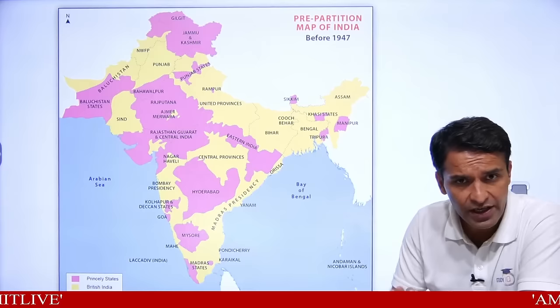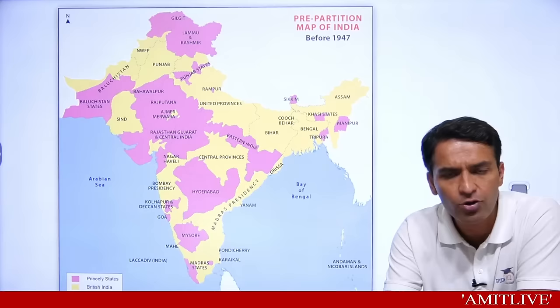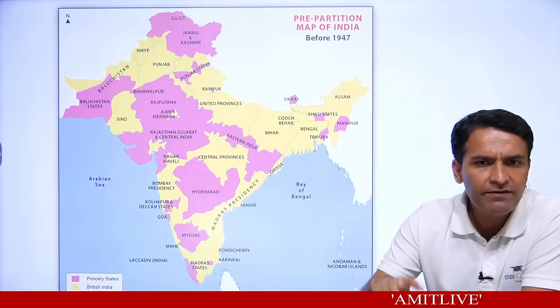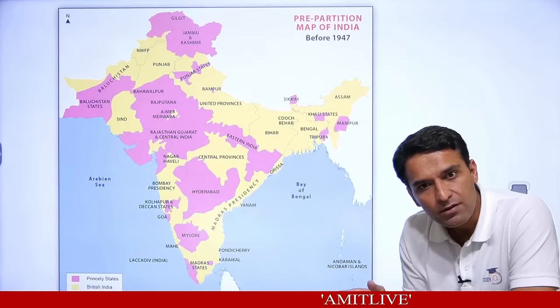Indian Congress and Muslim League both agreed to this. So the 389 people were selected. But once elections happened, differences arose again between Muslim League and Congress. The Muslim League decided to boycott the Constituent Assembly.